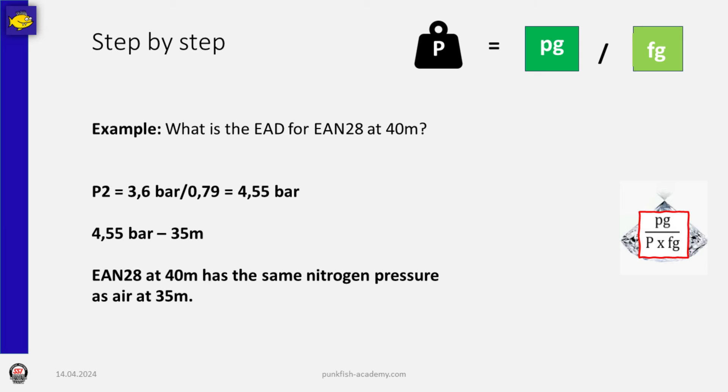So, easy like that, we now have to divide the 3.6 bar that we want to compare with a fraction of nitrogen in air which is the 0.79. Now this leads us to the result of 4.55 bar as the second pressure, as the pressure we compare. 4.55 bar is 35 meters. You remember this, it was minus 1 bar for the atmosphere, times 10 for 10 meter is 1 bar.